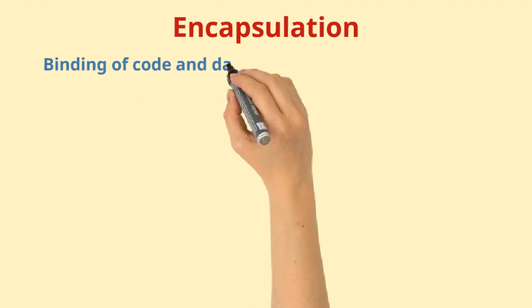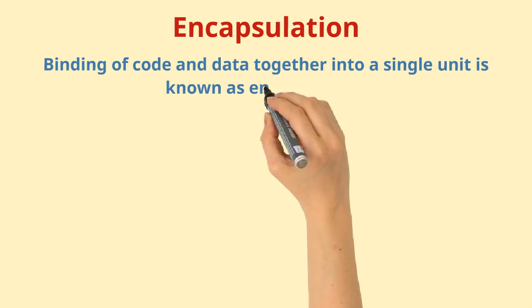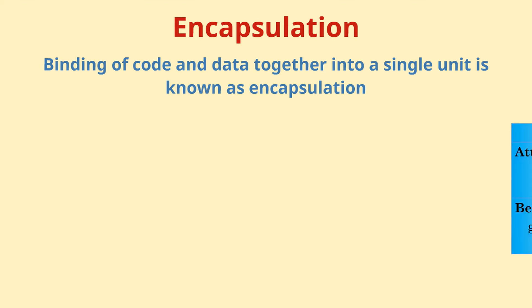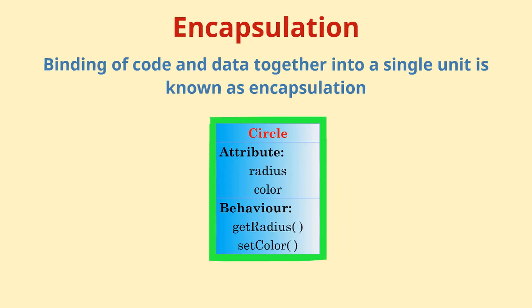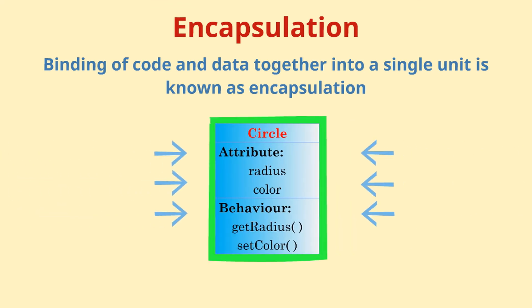First is encapsulation. Binding or wrapping of code and data together into a single unit is known as encapsulation. In object-oriented languages, a class binds together data and functions and keeps both safe from outside interference and misuse.